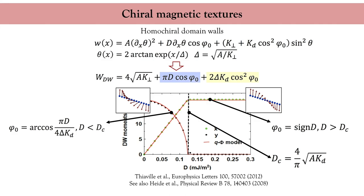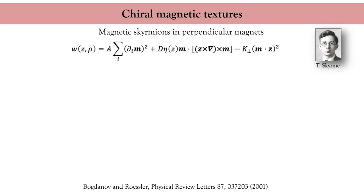The critical Dzyaloshinskii-Moriya interaction at which this transition happens determines the boundary between intermediate and pure Néel wall configurations. This transition is of utmost importance for applications, because Néel walls can reach very high velocities when driven by a current. Even more exciting magnetic textures can be stabilized by the Dzyaloshinskii-Moriya interaction. Following the very influential work of Bogdanov and Rössler, let us consider a perpendicularly magnetized ferromagnet with exchange, Dzyaloshinskii-Moriya interaction, and perpendicular anisotropy.